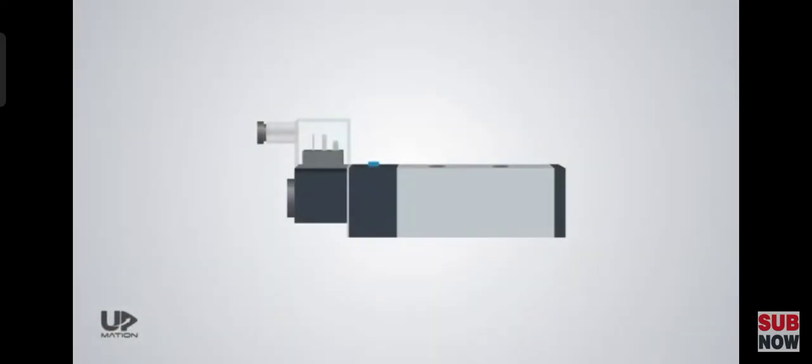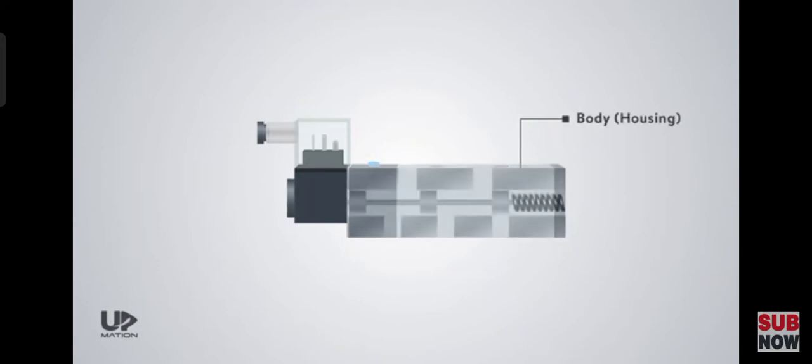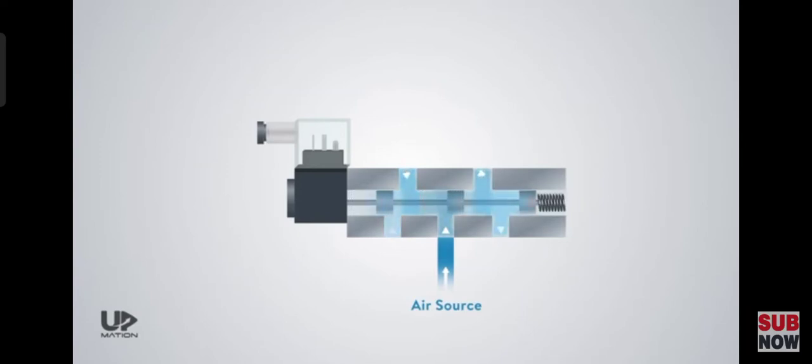Now, let's take a look at the components and simplified mechanism of this directional control valve. This is the body or housing of the control valve inside of which there are the paths that air flows through them. The holes you see here are called ports. Within the housing, there is a moving part that leads the air toward different ports of the valve and blocks the others.